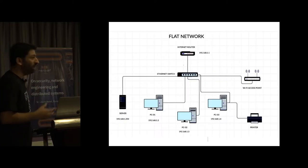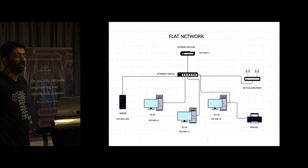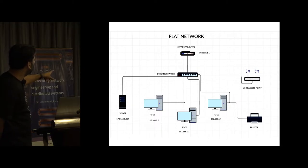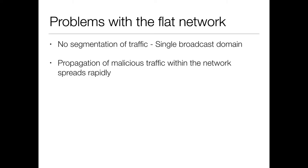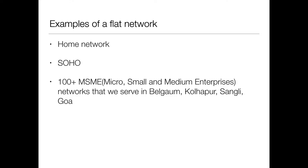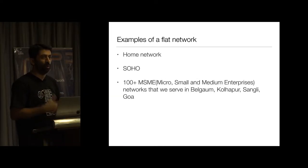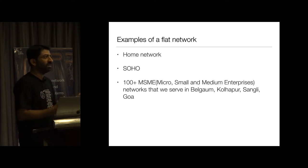Here is a simple example of a flat network. The computers and servers are all part of the network and can communicate with one another without any restrictions. This also gives an ecosystem for bad traffic as well. Examples of flat networks include a home wireless network or a SOHO office — which is typical of the 100-plus networks we serve in tier 2 and tier 3 cities.